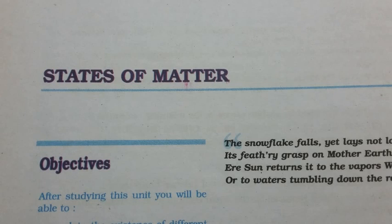Assumptions or postulates of the kinetic molecular theory of gases are given below. These postulates are related to atoms and molecules which cannot be seen; hence it is said to provide a microscopic model of gases. First: gases consist of a large number of identical particles that are so small and so far apart that the actual volume of the molecules is negligible in comparison to the empty space between them — they are considered as point masses. This assumption explains the great compressibility of gases.